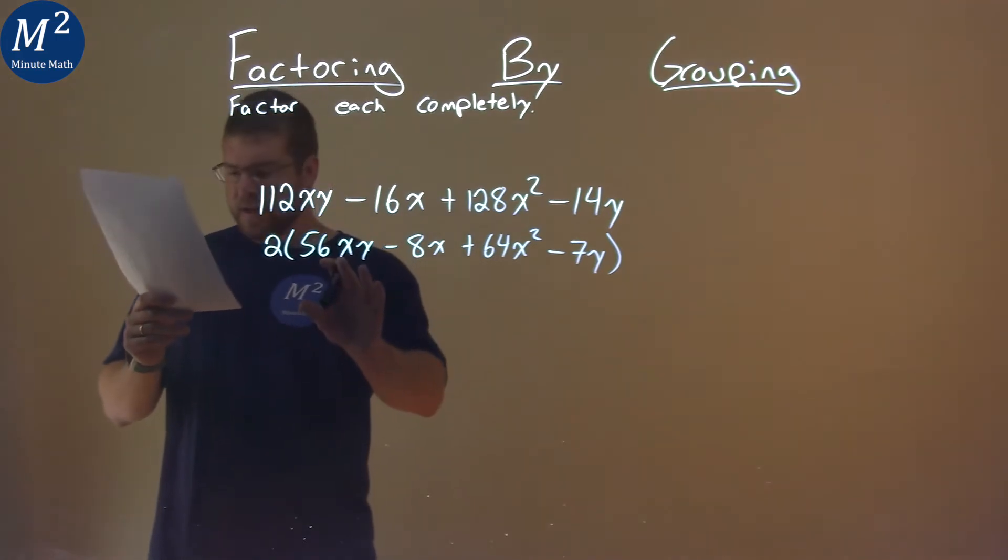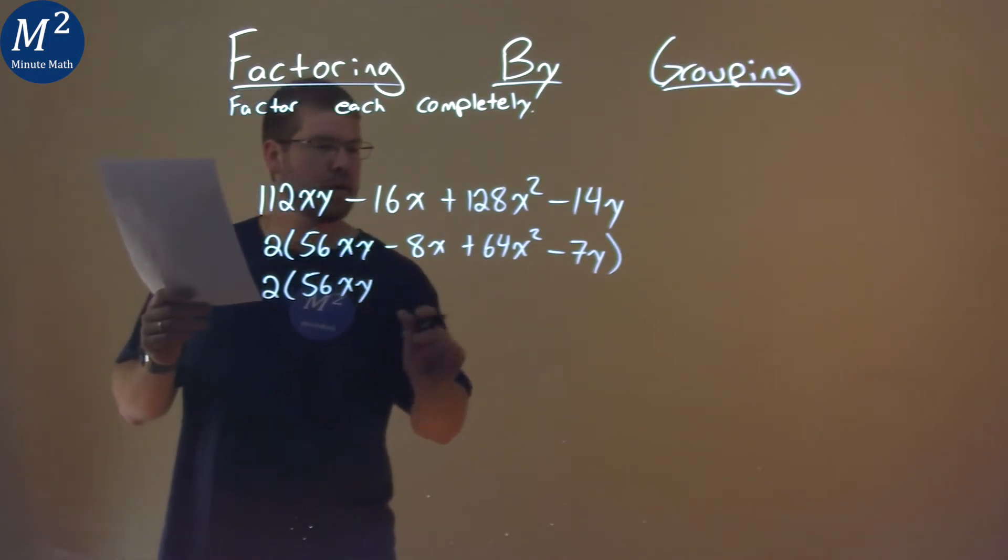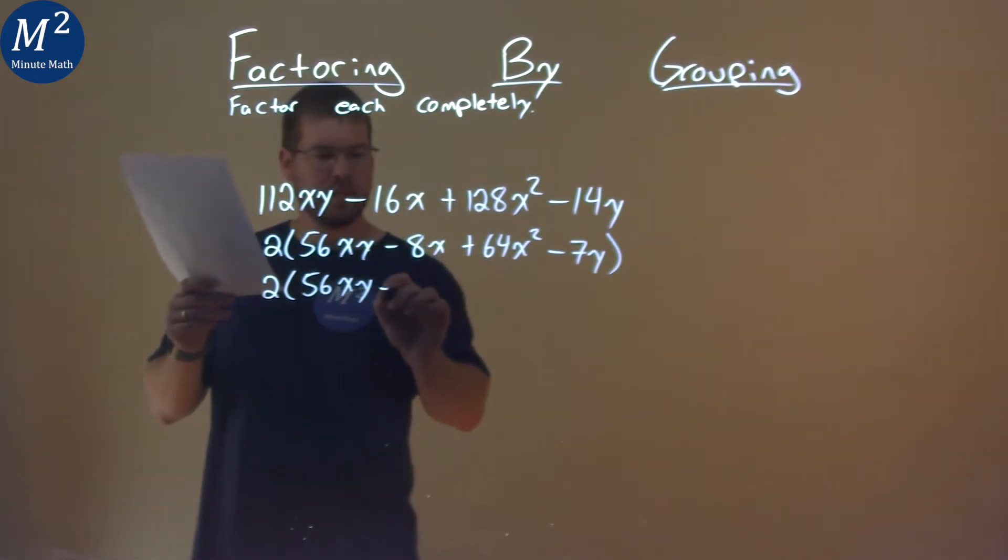Now from here, I'm actually going to rearrange to put some of my similar terms next to each other. 2 comes down, 56xy stays here, let's put the other y next to it, minus 7y.